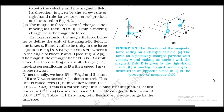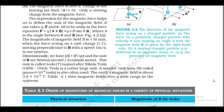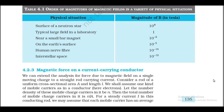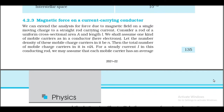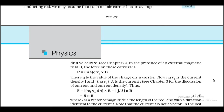Section 4.2.3: Magnetic Force on a Current-Carrying Conductor. We extend the analysis for force due to a magnetic field on a single moving charge to a straight rod carrying current. Consider a rod of uniform cross-sectional area A and length l. Let the number density of mobile charge carriers be n, so the total number is nAl. For a steady current i, each mobile carrier has an average drift velocity v_d. In the presence of an external magnetic field B, the force on this carrier is F = nAl·q·(v_d × B).